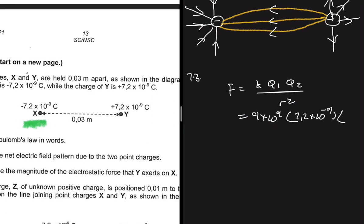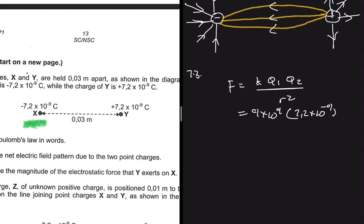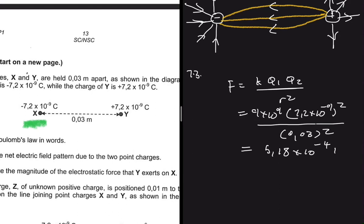Multiply by q₂, which is also 7.2 × 10⁻⁹, so we can write (7.2 × 10⁻⁹)², then divide by the distance between the two charges: 0.03, squared. That gives us 5.18 × 10⁻⁴ newtons.